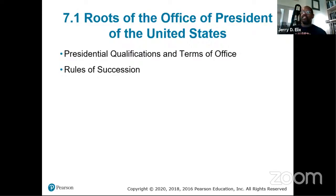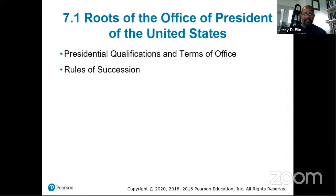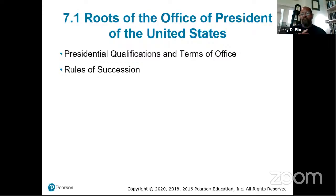Everything else is determined by the public — what the public feels about who should be President. The rules of succession are straightforward: if something happens to the President, the Vice President takes over. If something happened to both the Vice President and the President at the same time, then the Speaker of the House, and so on and so forth.